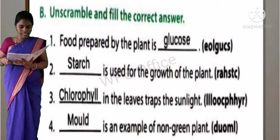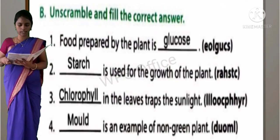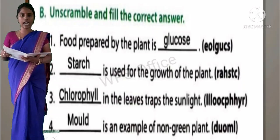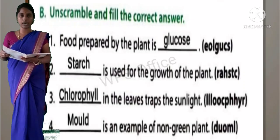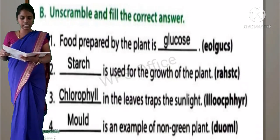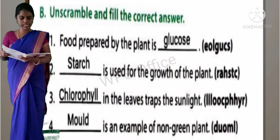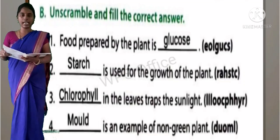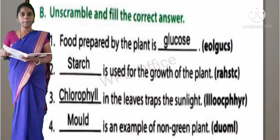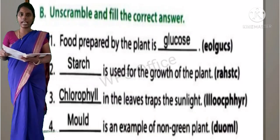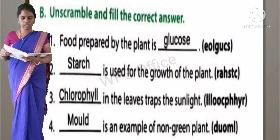Second one: Dash is used for the growth of the plant. Answer is starch - S-T-A-R-C-H. Third one: Dash in the leaves traps the sunlight. Answer is chlorophyll - C-H-L-O-R-O-P-H-Y-L-L. Chlorophyll in the leaves traps the sunlight.